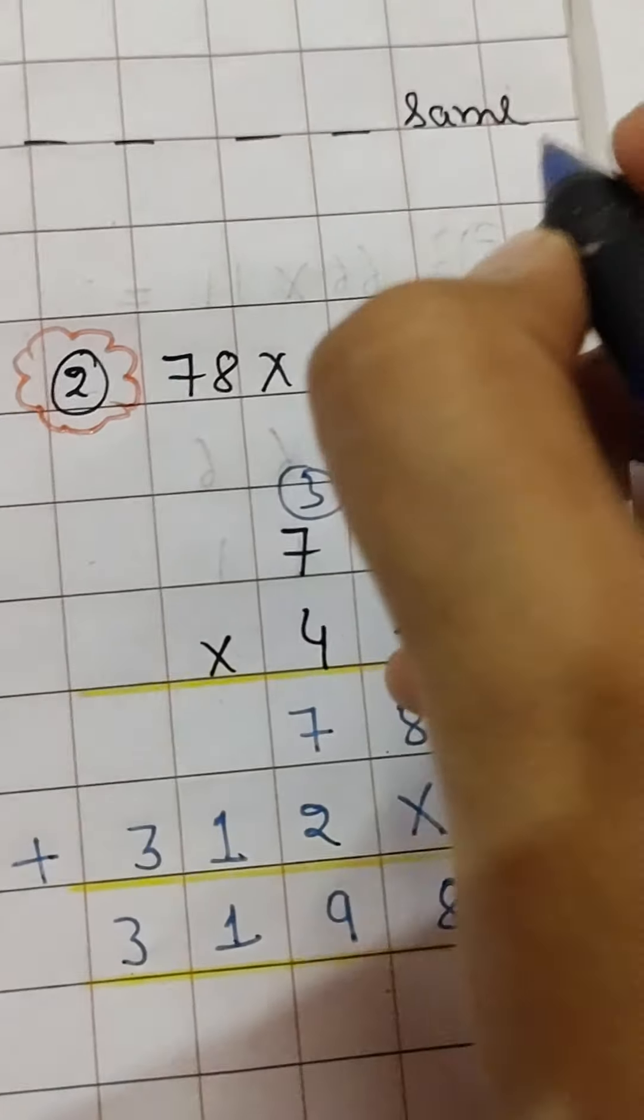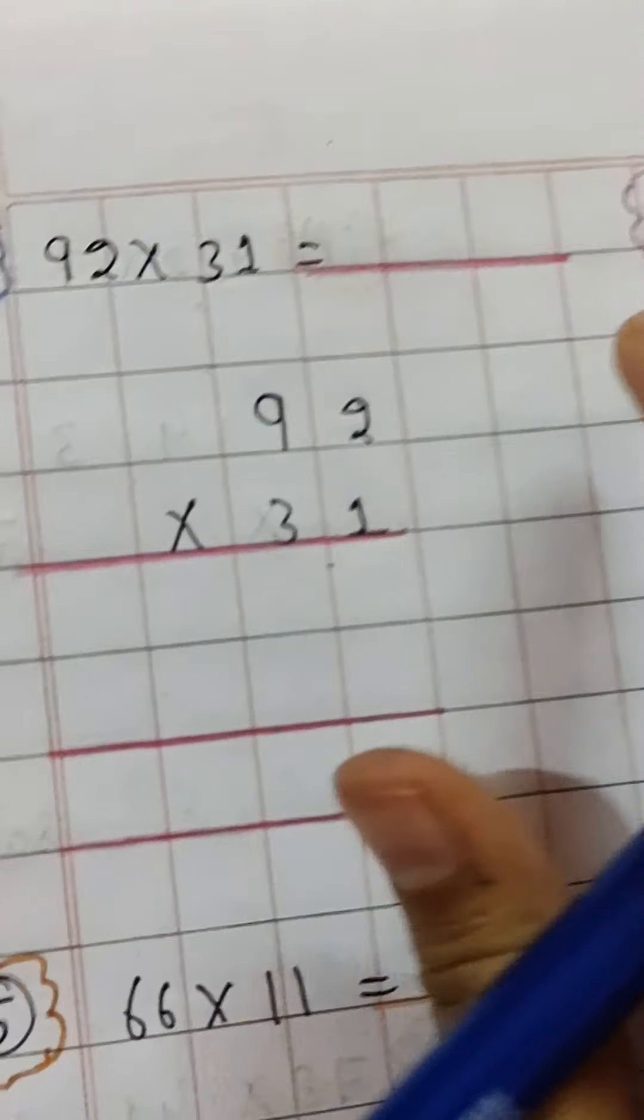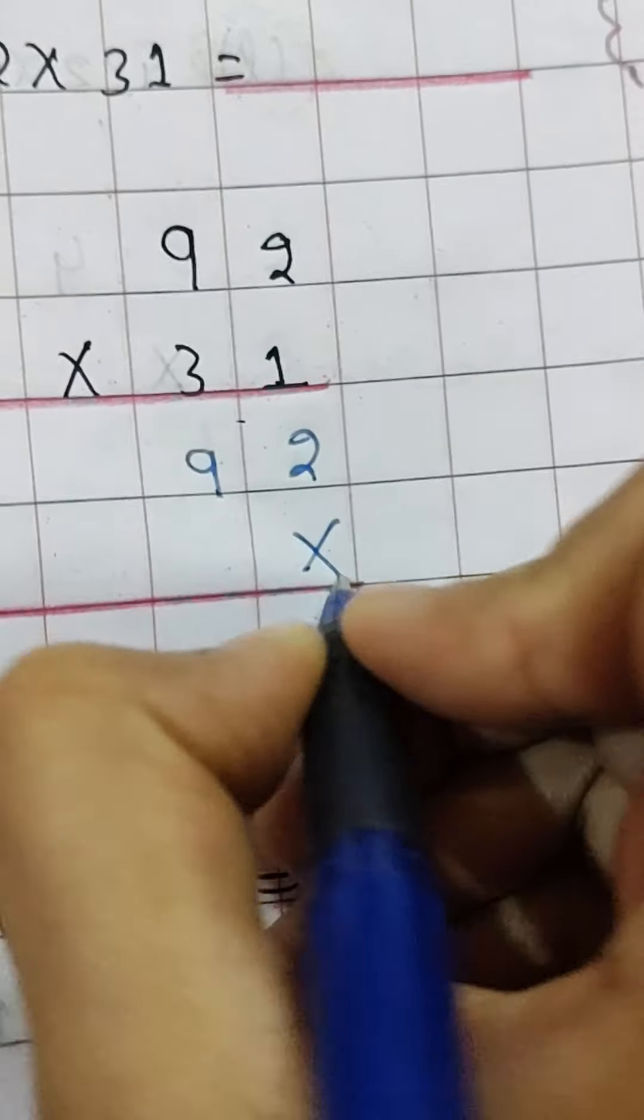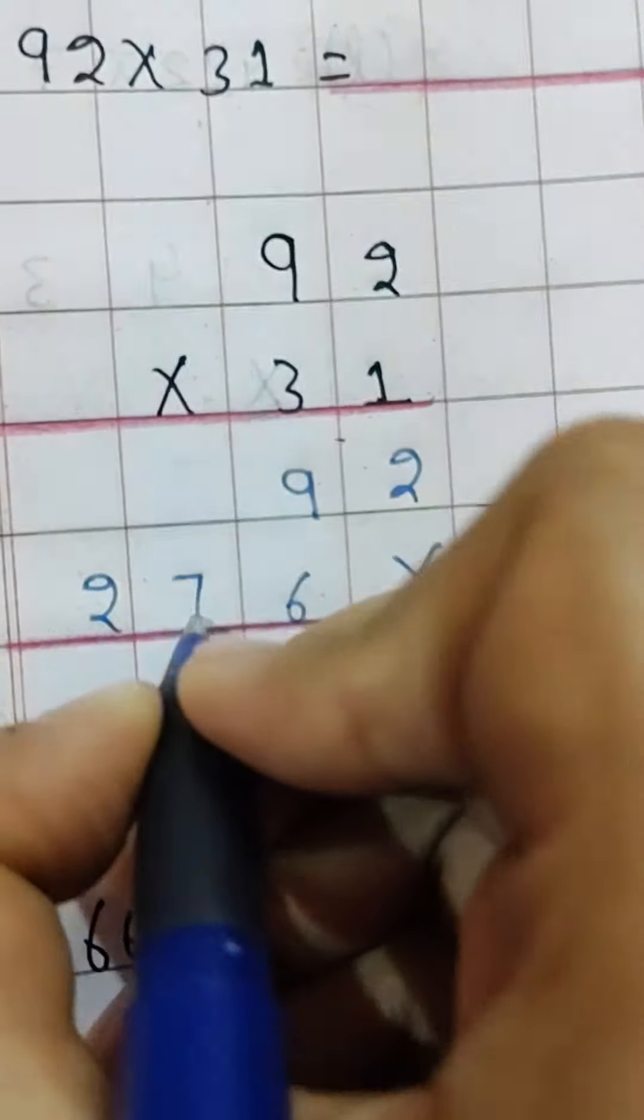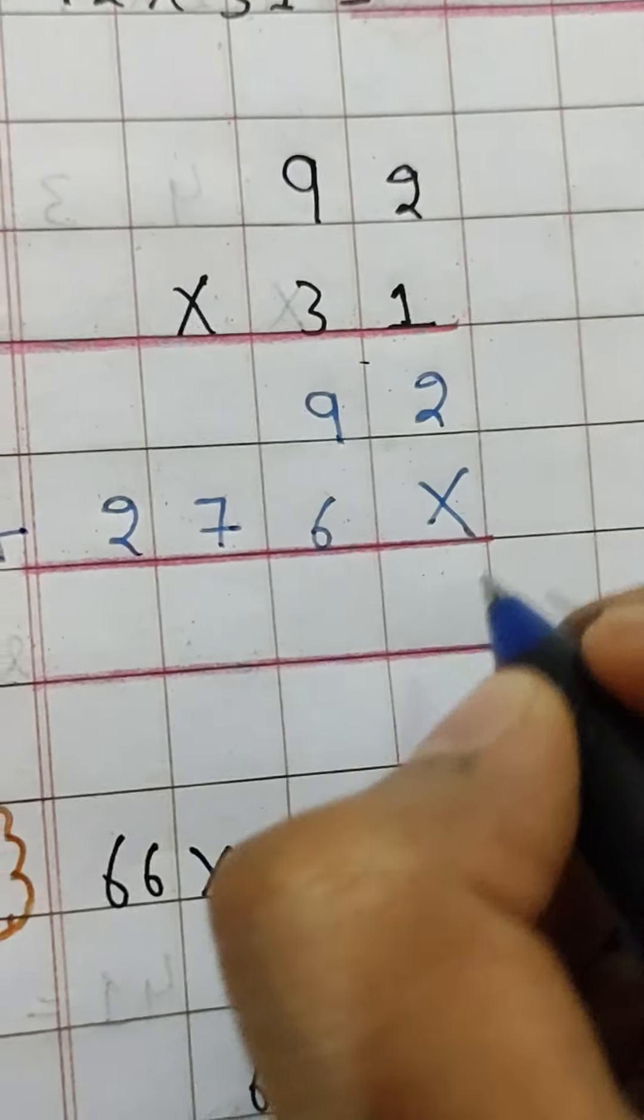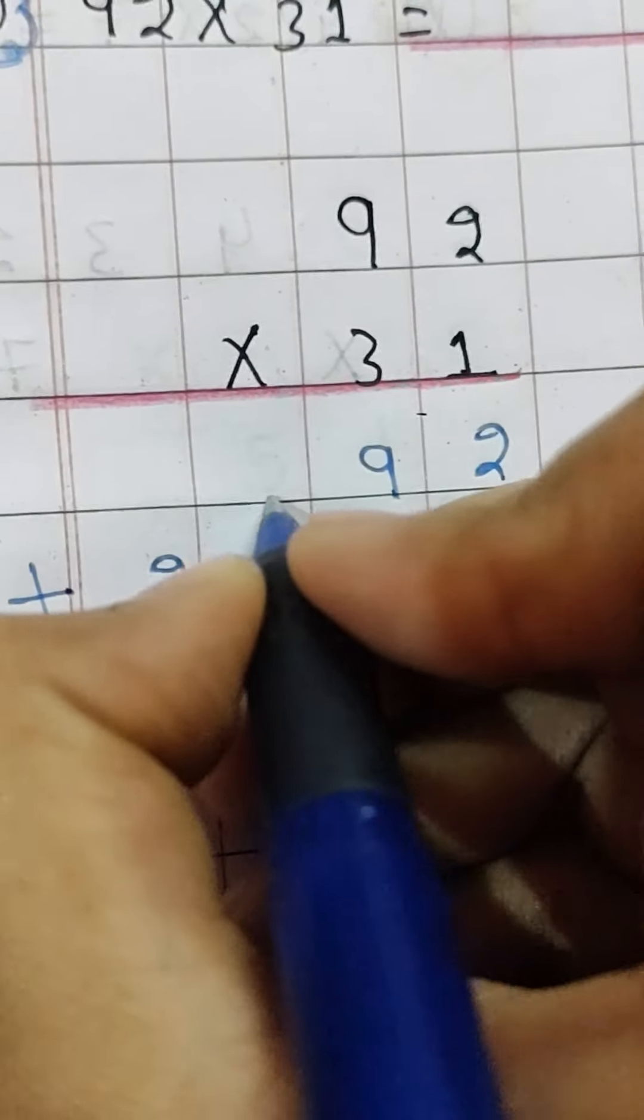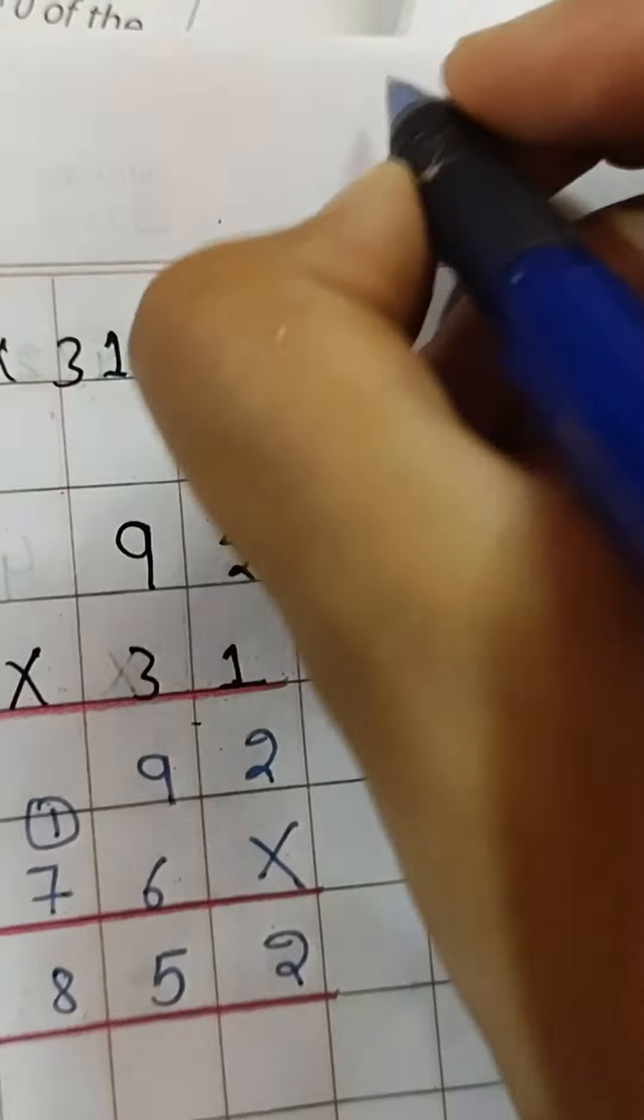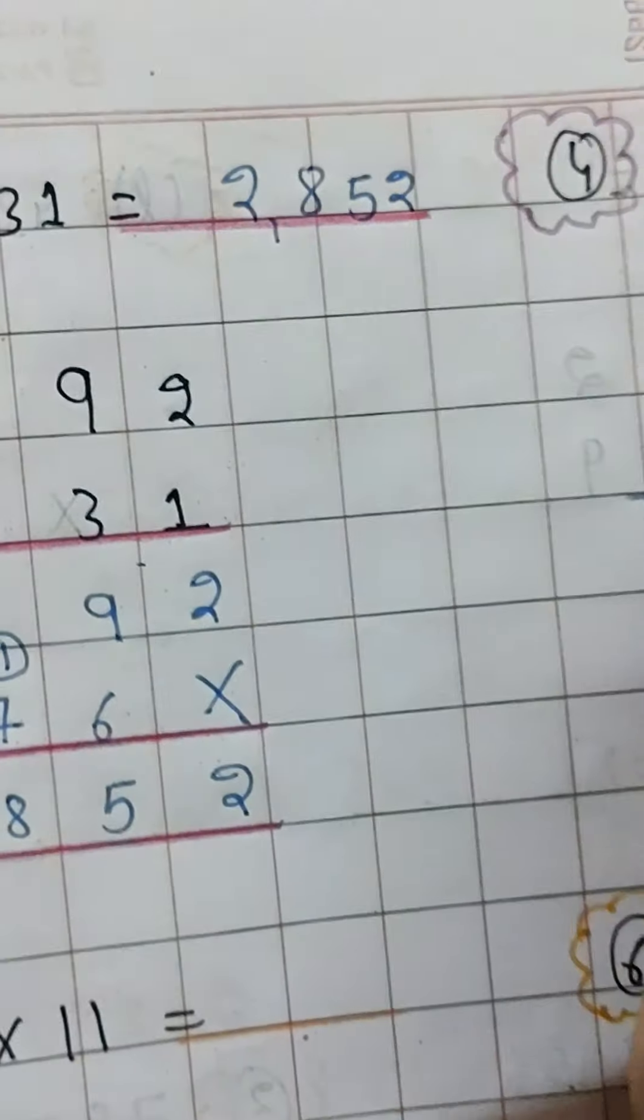Let me do two more parts for you. 319 times 9: 9 times 9 is 81, cross. 3 times 9 is 27, and you put the plus sign. Then you have to plus: 1 plus 6 is 7, 1 here, 8 plus 1 is 9, and then 2. So your answer is 2855.